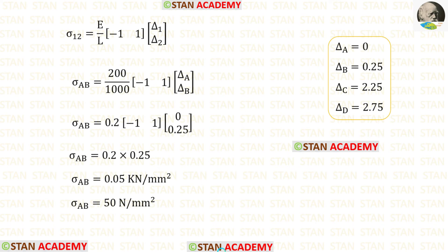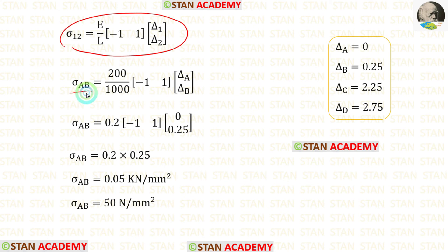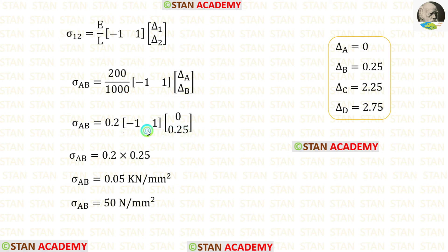Now let us find the stresses using the stress formula. First, let us find sigma AB. Young's modulus is 200 and length of AB is 1000. We know that at section AA there is no displacement, so delta A = 0, and we found delta B = 0.25. Multiplying the matrices gives 0.25, and 0.2 × 0.25 × 1000 gives sigma AB = 50 N/mm².